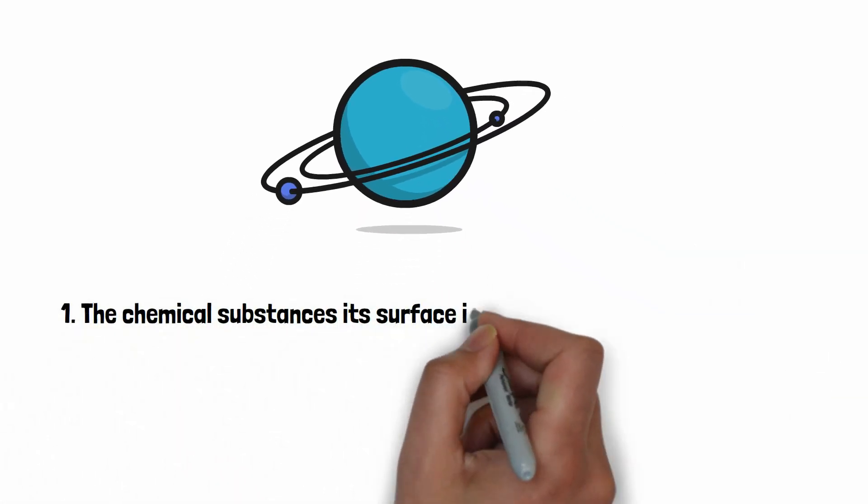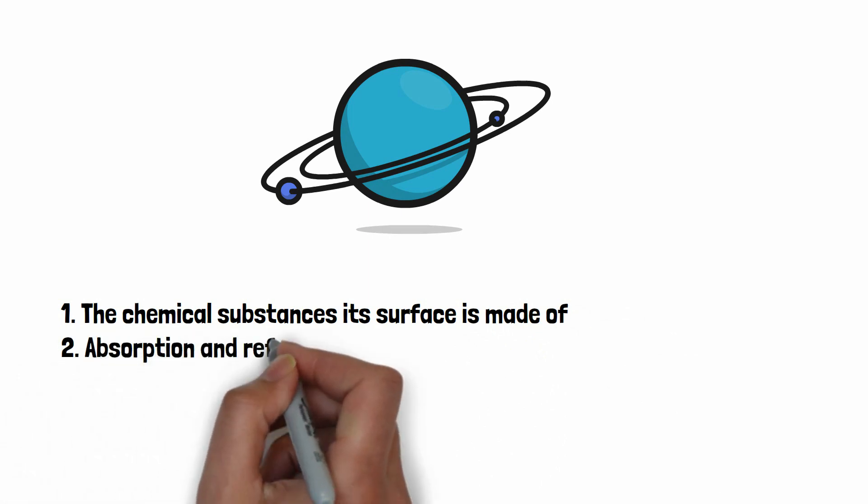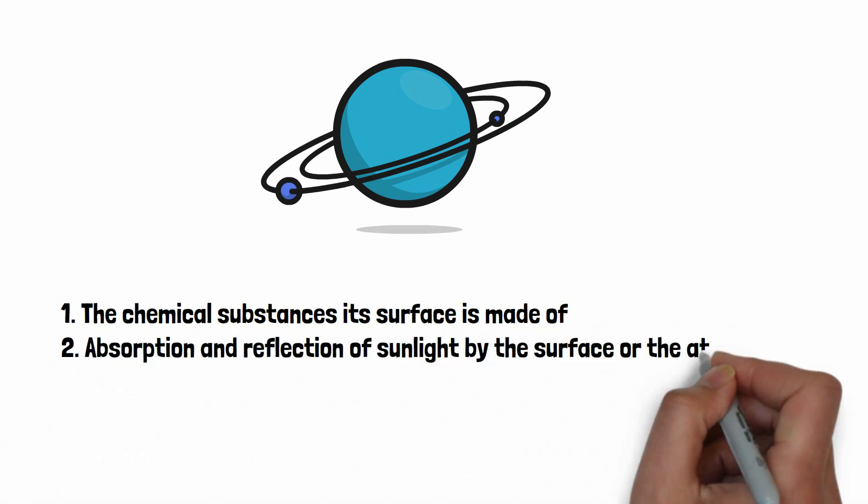Which color a planet appears as mainly depends on two factors. Number one, the chemical substances its surface is made of. Number two, absorption and reflection of sunlight by the surface or the atmosphere.